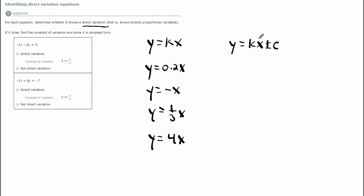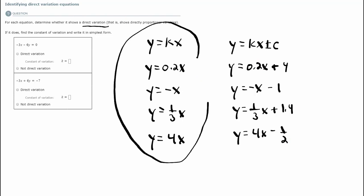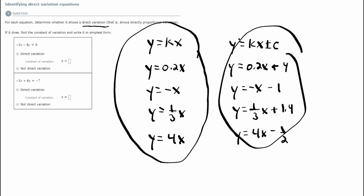These are examples of equations that are not direct variations — it will be y equals some number times x plus or minus another number. For example: y equals 0.2x plus 4, y equals negative x minus 1, y equals one-third x plus 1.4, or y equals 4x minus one-half. Notice it's y equal to some number times x plus or minus another number. The first set are all direct variation equations, and these are not.